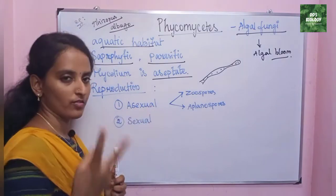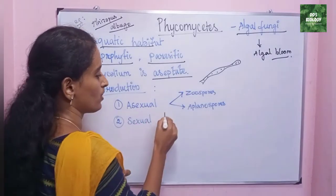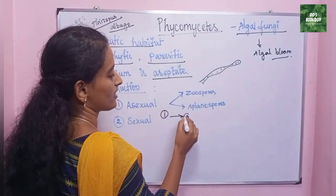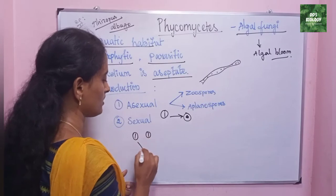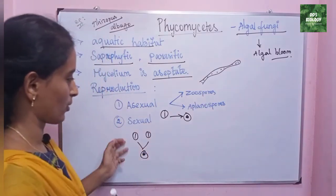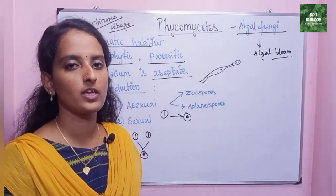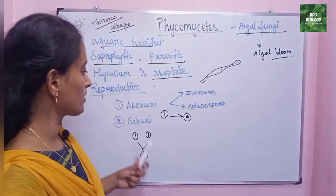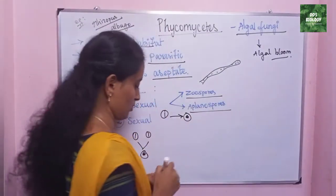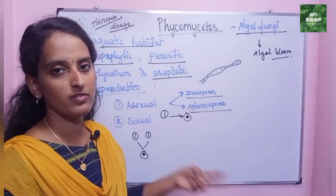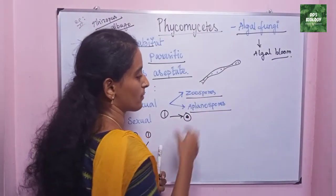Next, reproduction of Phycomycetes. There are two types of reproduction: asexual reproduction and sexual reproduction. Asexual reproduction involves one parent only. Sexual reproduction involves two parents. Asexual reproduction of fungi includes spore formation, budding, and fragmentation. In Phycomycetes, asexual reproduction involves zoospores and aplanospores — two types of spore formation.